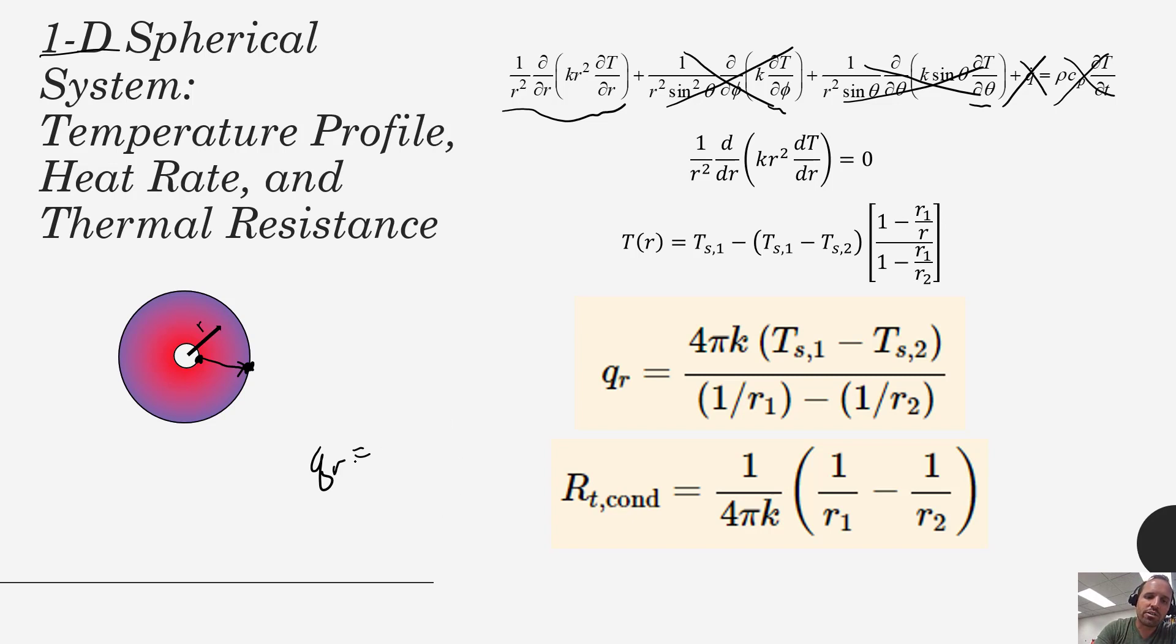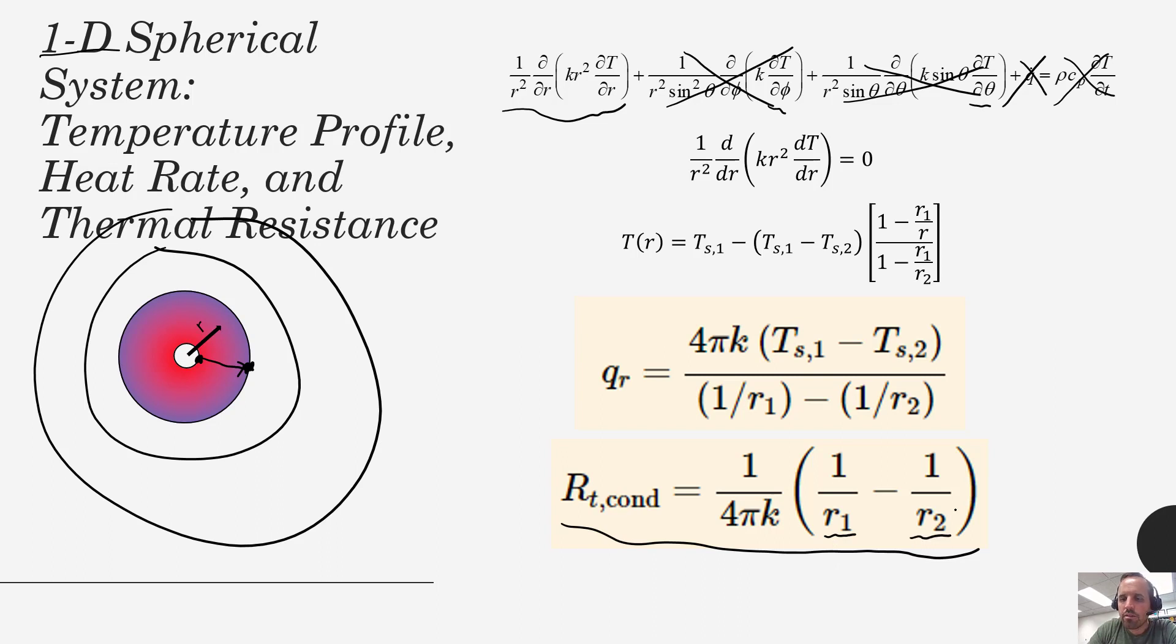Just like in the cylindrical system or the plane wall system you can have composite walls, you could have multiple layers of insulation on a sphere, and you could figure out the total rate of heat flow. Let's say we had multiple layers here. We could just calculate the spherical resistance for each where instead of using R1 and R2 we'd have the outer radius subtract the inner radius term and then we could add those all up in series and we could get that our total rate of heat transfer from inside to outside would be equal to our temperature difference divided by the total thermal resistance. I think you've got the idea already from studying plane wall systems and cylindrical systems.